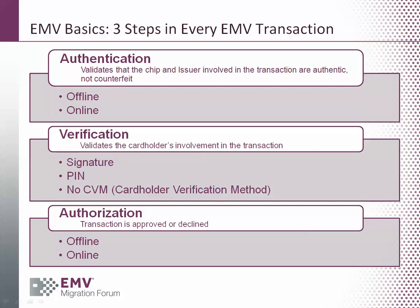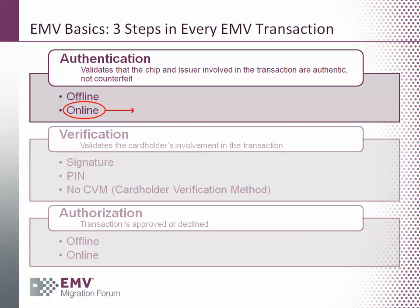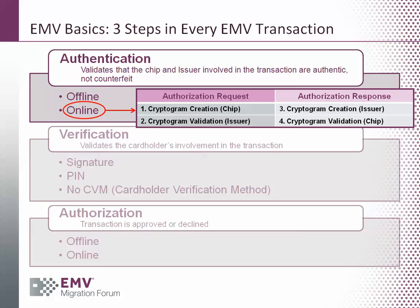There are three basic steps in every EMV transaction. One is authentication, which validates that the chip and issuer involved in the transaction are authentic and not counterfeit. Second is verification, which validates the cardholder's involvement in the transaction. And third is authorization, whereby the transaction is approved or declined.